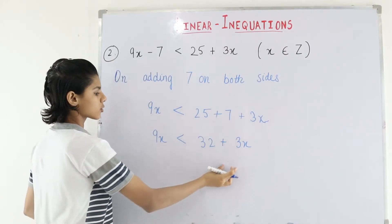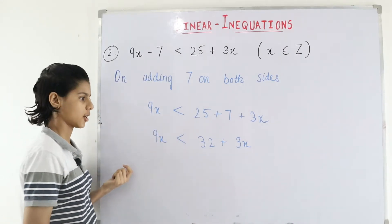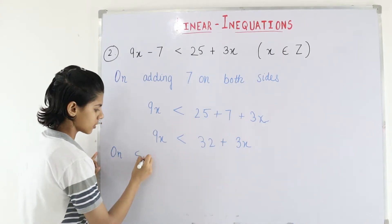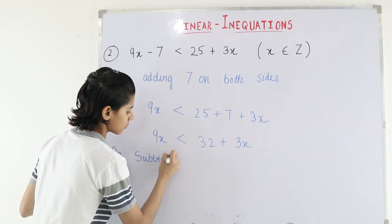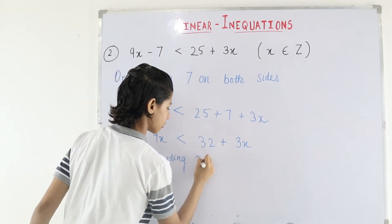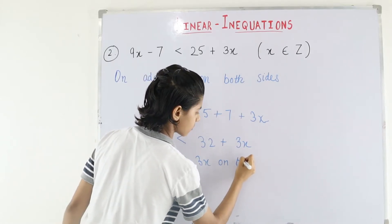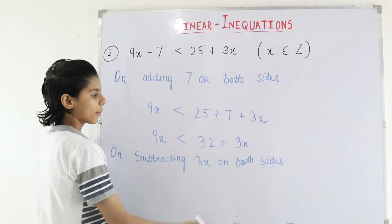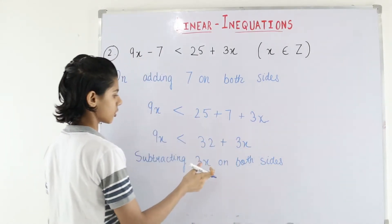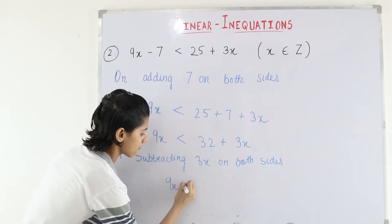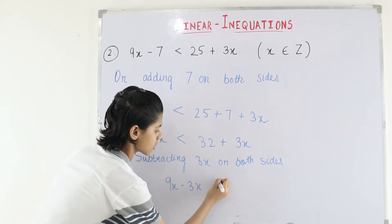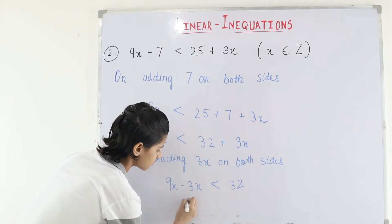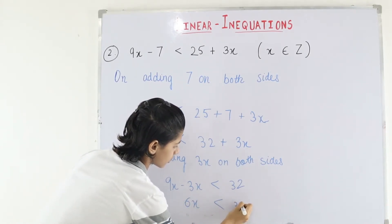Now we shift 3x to this side because variables must go to one side. On subtracting 3x on both sides — subtracting 3x here cancels it, leaving 32 on that side. So 9x minus 3x is less than 32, and 9x minus 3x is 6x. Therefore, 6x is less than 32.